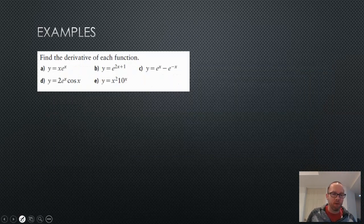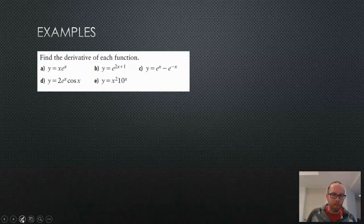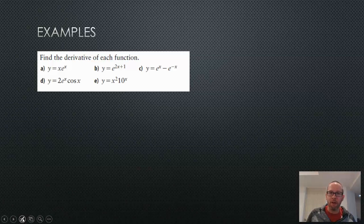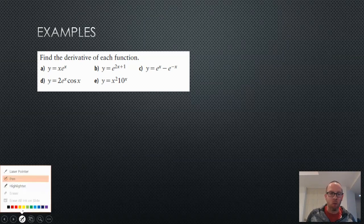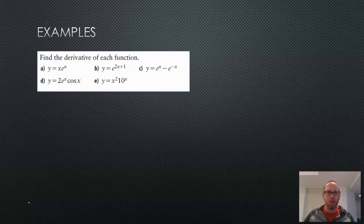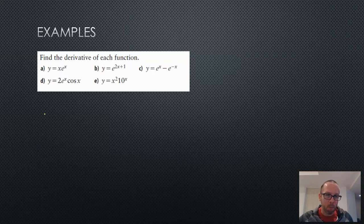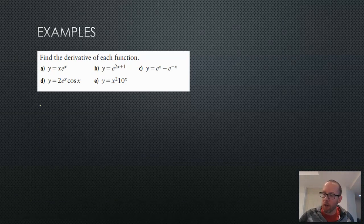You could almost treat this as a bit of a warm-up. We now know the derivative of e to the power of x is itself, and b to the power of x is b to the power of x times ln b. So if you want to try these five derivatives on your own, pause the video, and unpause when you're ready, or you can follow along as I do them here.